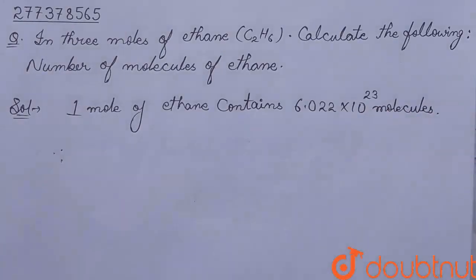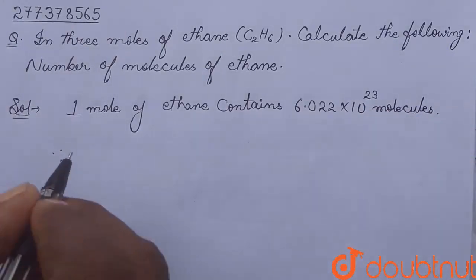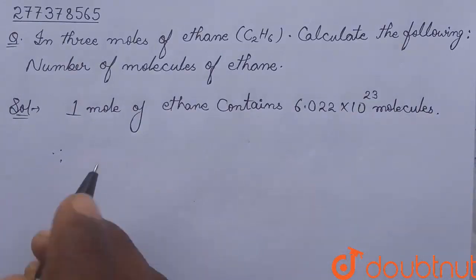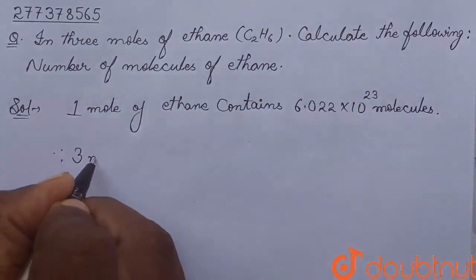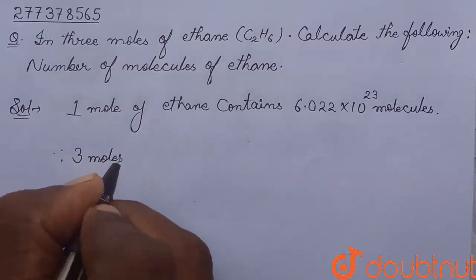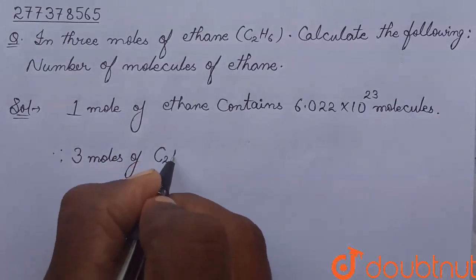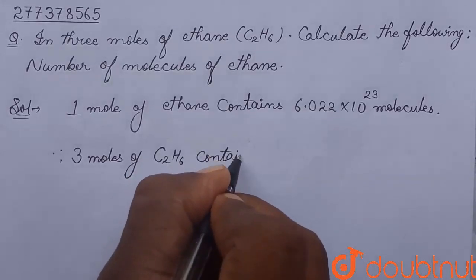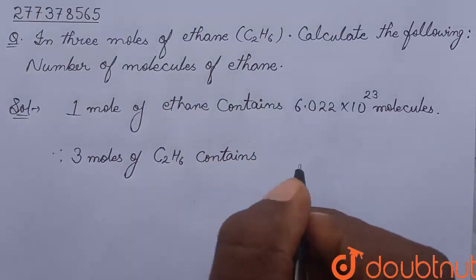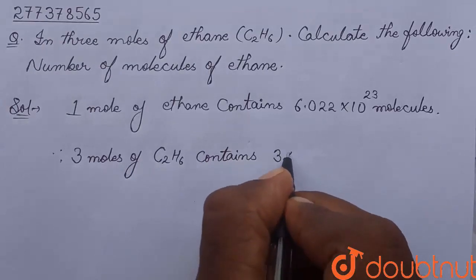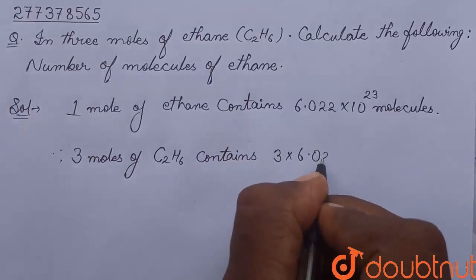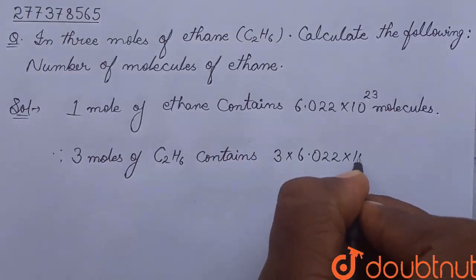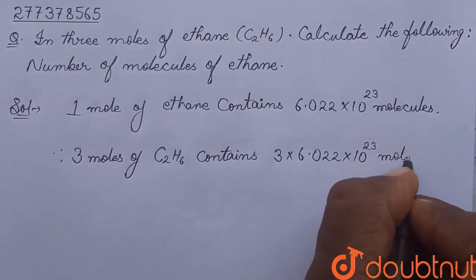Therefore, 3 moles of ethane contains 3 times Avogadro's number. So we can write here: 3 moles of C2H6 contains 3 times—simple unitary method we will use—contains 3 times 6.022 into 10 to the power 23 molecules.